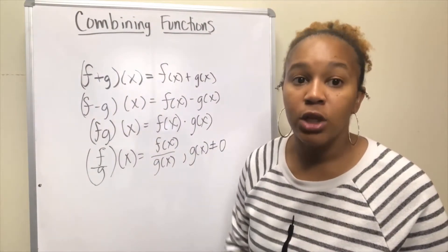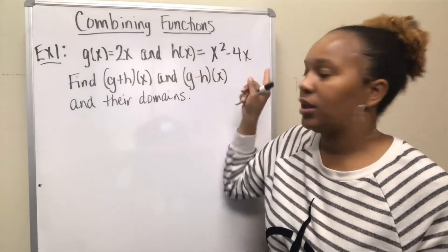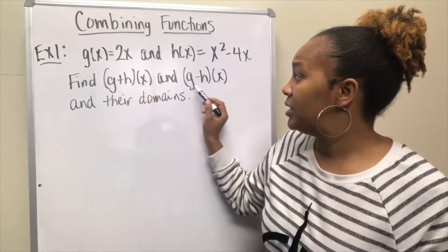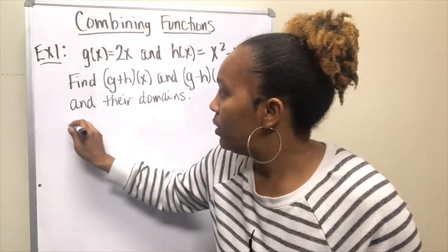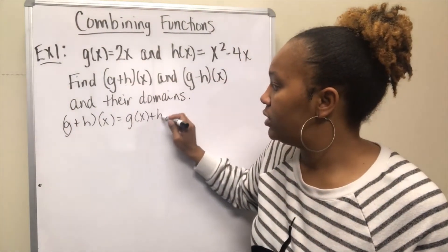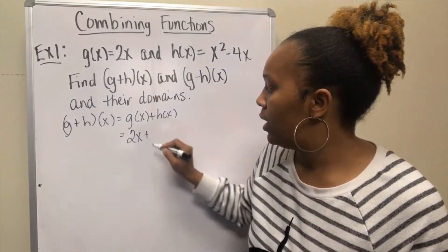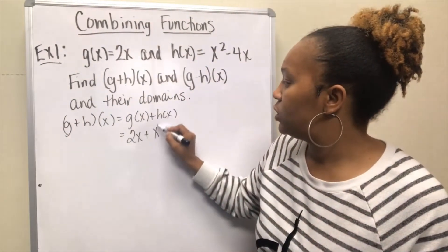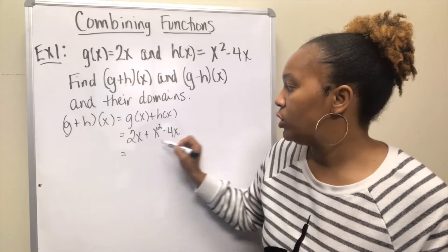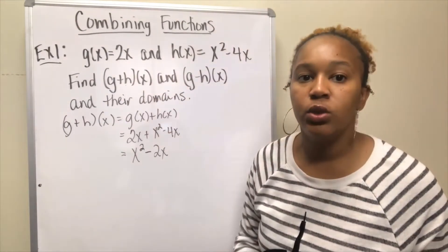Let's look at some examples. For example one, we have two functions: g(x) = 2x and h(x) = x² - 4x. We want to combine these by first adding them — find (g+h)(x) — and second subtracting them — find (g-h)(x). To find (g+h)(x), that's g(x) plus h(x), which is 2x plus x² - 4x. Combining like terms, 2x and -4x give -2x, so this equals x² - 2x.